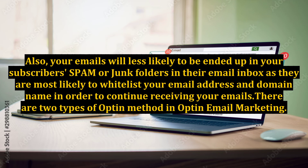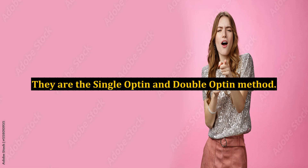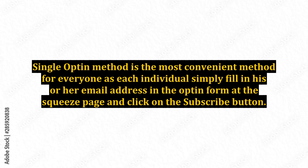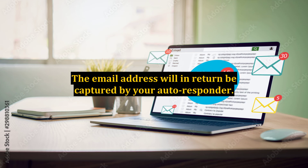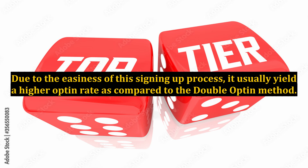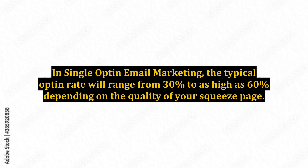There are two types of opt-in method in opt-in email marketing: the single opt-in and double opt-in method. Single opt-in method is the most convenient method for everyone, as each individual simply fills in his or her email address in the opt-in form at the squeeze page and clicks on the subscribe button. The email address will in return be captured by your autoresponder. Due to the easiness of this signing up process, it usually yields a higher opt-in rate as compared to the double opt-in method. In single opt-in email marketing, the typical opt-in rate will range from 30% to as high as 60% depending on the quality of your squeeze page.